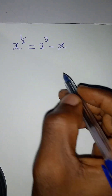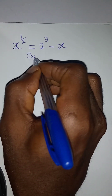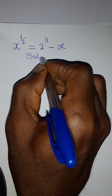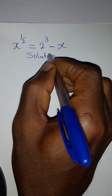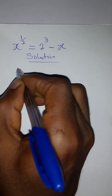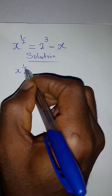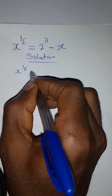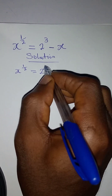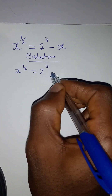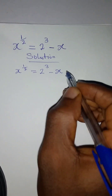Hello everyone, let's solve this problem quickly. We have x to the power of 1/2 equal to 2 to the power of 3 minus x.